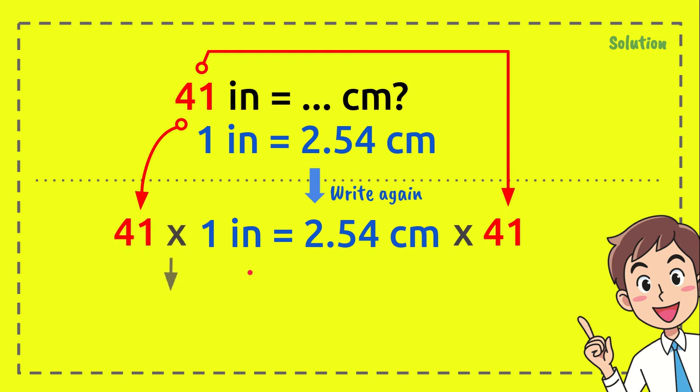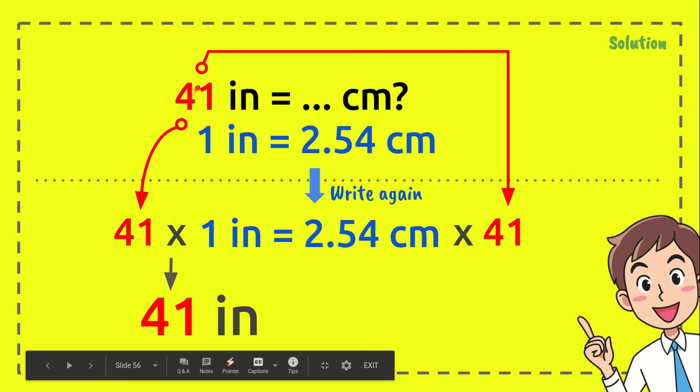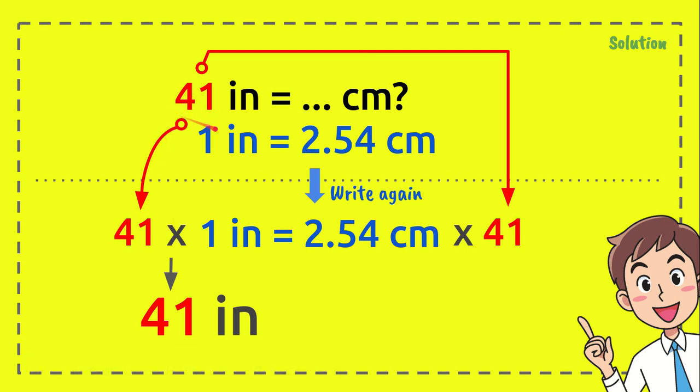Now here comes the last part of this video. 41 times 1 equals 41, of course, just like the number from the question. And then 2.54 centimeters times 41 equals 104.14 centimeters. And that's the answer.